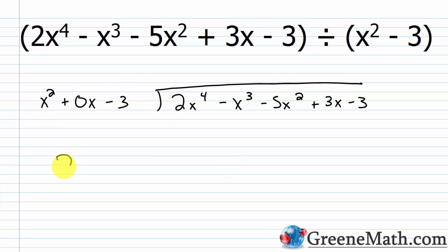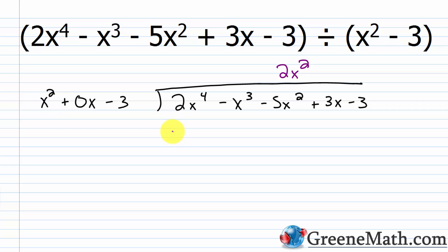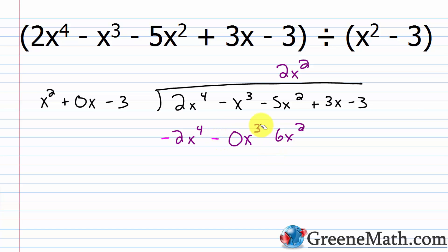Leading term into leading term: 2x to the fourth power over x squared — x to the fourth over x squared cancels to give 2x squared. Write 2x squared up top. Multiply: 2x squared times x squared is 2x to the fourth power, 2x squared times 0x is 0x cubed, and 2x squared times negative 3 is minus 6x squared. Changing signs to subtract: 2x to the fourth minus 2x to the fourth is 0, negative x cubed minus 0x cubed is negative x cubed, and negative 5x squared plus 6x squared is x squared.